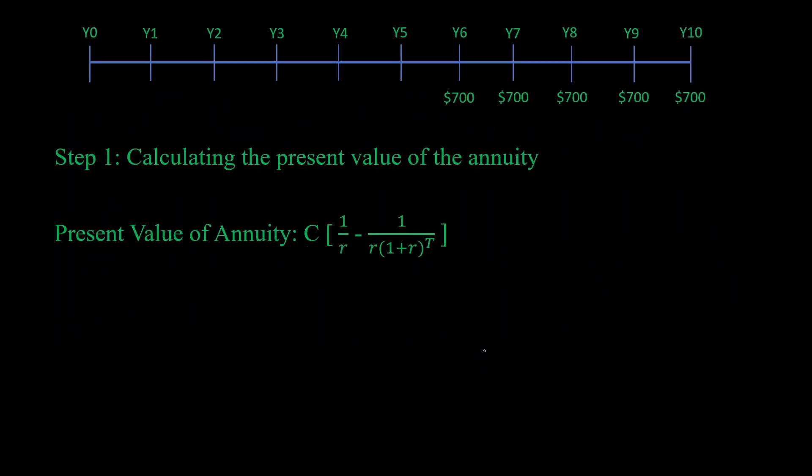We know the formula for present value of an annuity. Now we substitute the values. C is the payment you get in the first period, r is the interest rate, and T is the total number of periods. In our case, C = $700, r = 10% = 0.1, and T = 5.